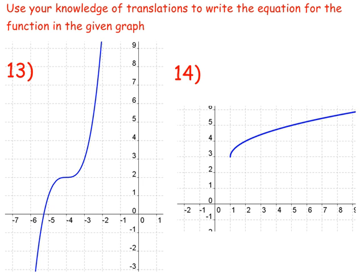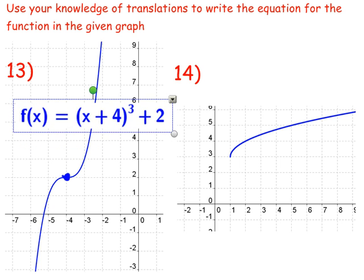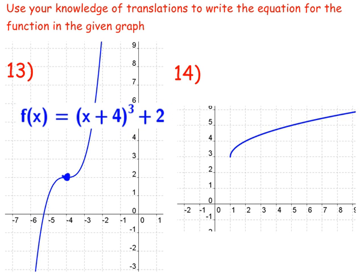Okay. Should note that that point that I just marked right here is what used to be at the origin for our cubing function. So that helps you see that it has been moved left 4 and up 2. And this is its solution. Number 14, that's our square root function. It has been moved to the right 1 and up 3. So here is our equation. Get the hang of this.